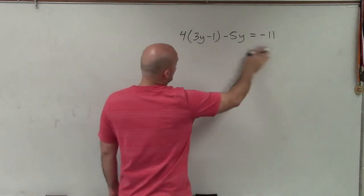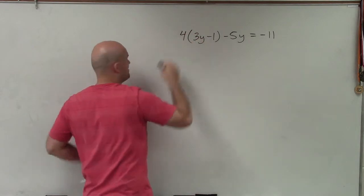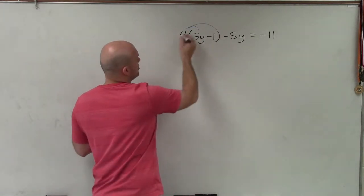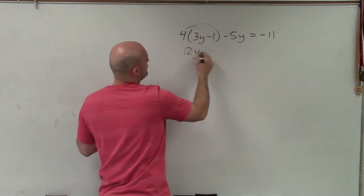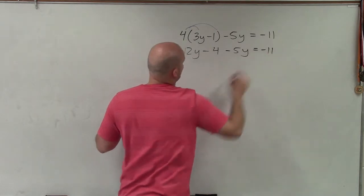We do not have any powers or exponents, so therefore I need to apply multiplication. And this 4 is being multiplied by both these terms, so I need to apply distributive property. So 4 times 3y, it's going to be 12y minus 4 minus 5y equals negative 11.